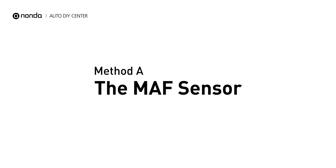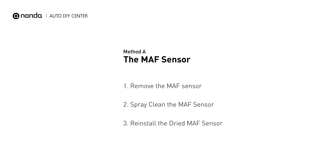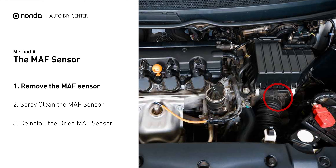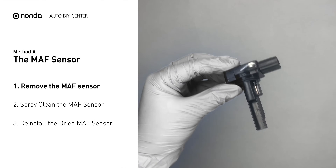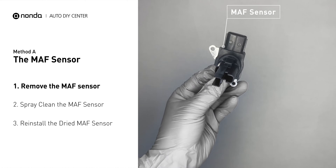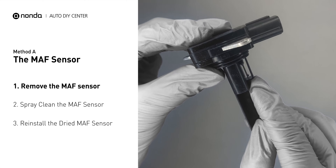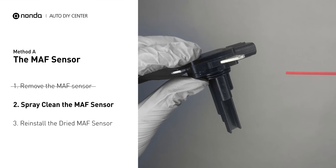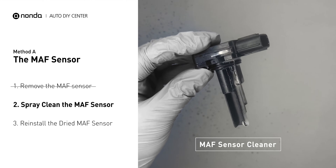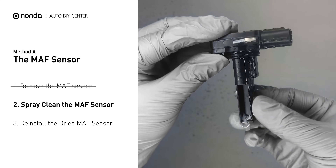Method A: MAF sensor. MAF sensors are located between the air filter and the throttle body. Carefully remove the MAF sensor from your car and do a quick inspection around. The wire inside often gets dirty and needs to be cleaned. You can spray the MAF sensor cleaner onto the wire perpendicularly to the ground so that it won't damage the MAF sensor.